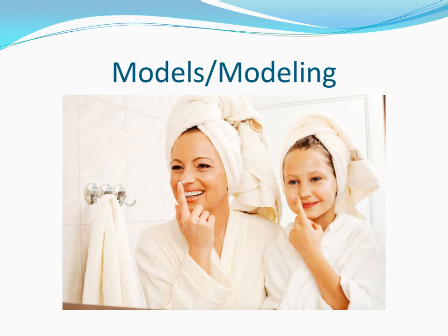As far as learning and academic skills are concerned, you can learn academic skills by observing a model. You can learn how to do a task and even how to think about a task, and this is referred to as cognitive modeling. As a negative, however, aggression can also be learned from modeling.